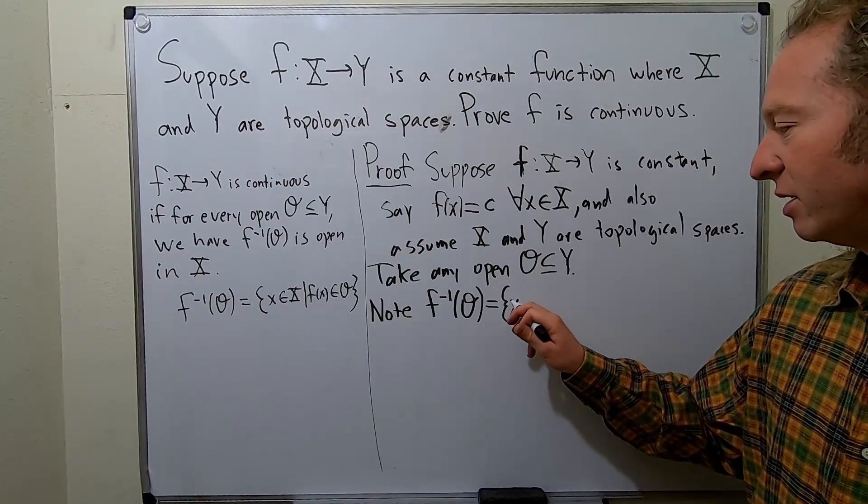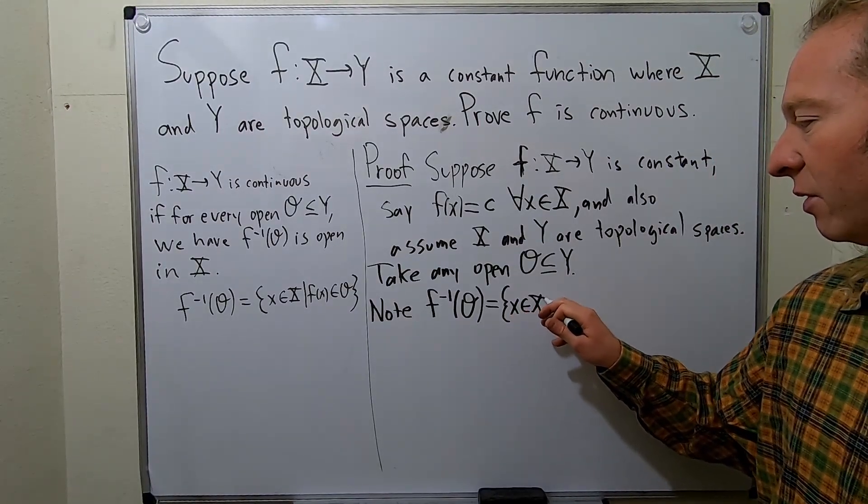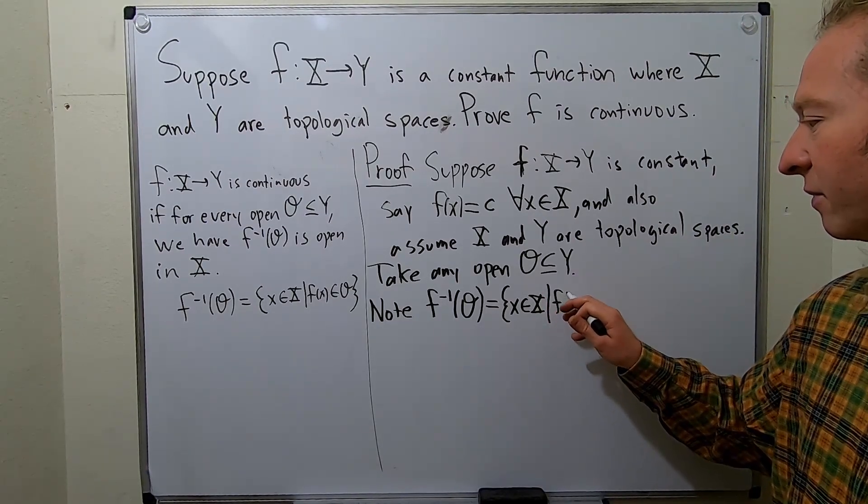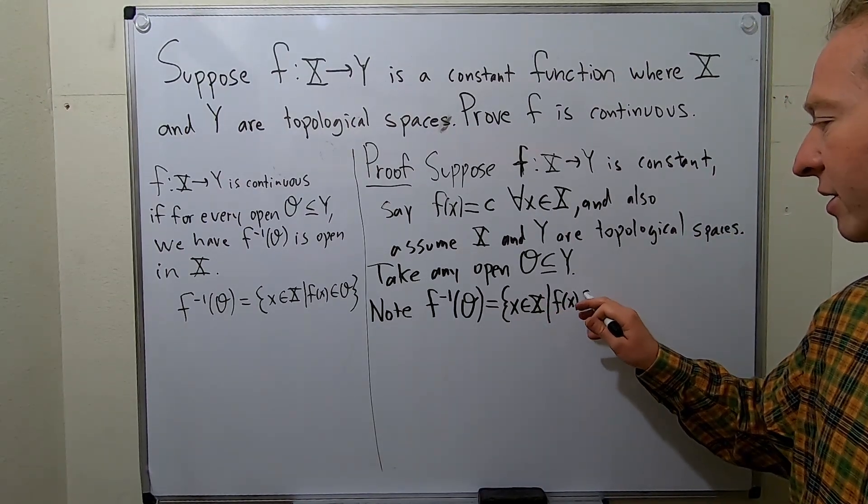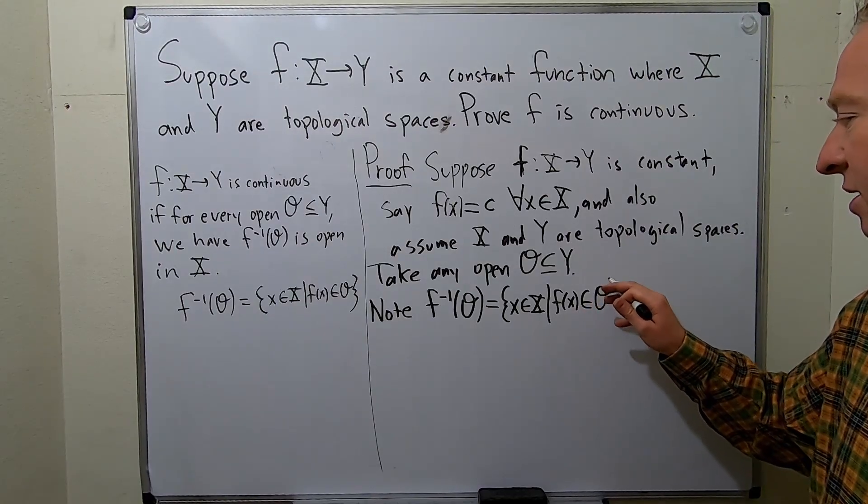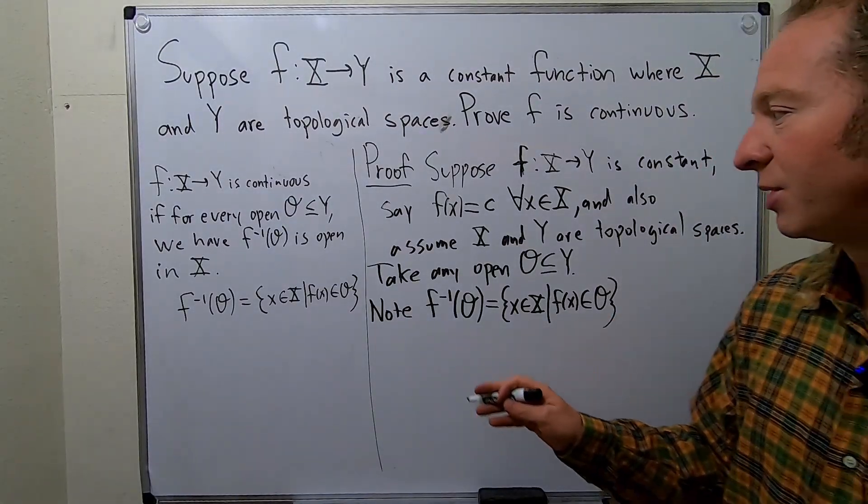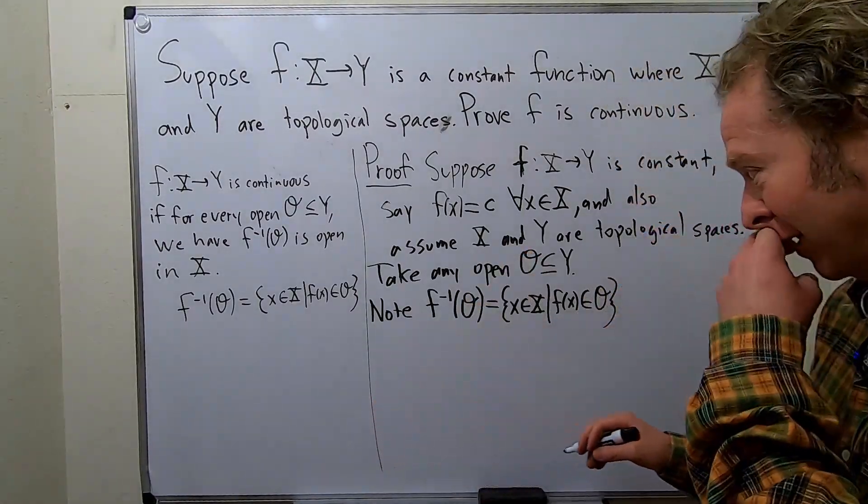It's all of the x's in capital X, such that F of x is in O, right? That's the definition of the inverse image. We haven't done anything except write down the definition.